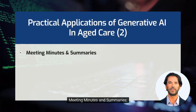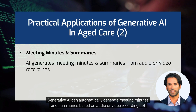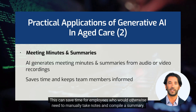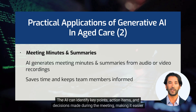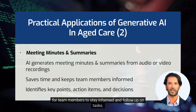Meeting minutes and summaries. Generative AI can automatically generate meeting minutes and summaries based on audio or video recordings of the meeting. This can save time for employees who would otherwise need to manually take notes and compile a summary. The AI can identify key points, action items, and decisions made during the meeting, making it easier for team members to stay informed and follow up on tasks.